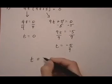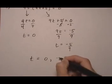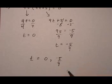So we show our final answer is t is 0, or minus 5 over 9.